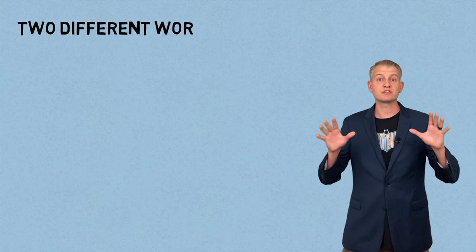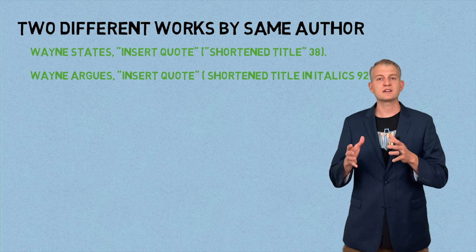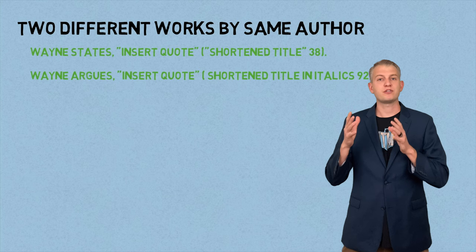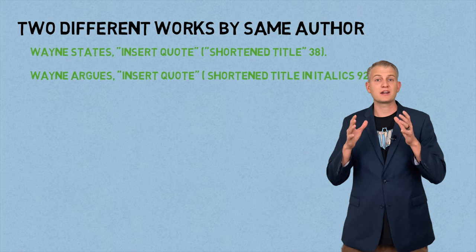If you're citing two different sources by the same author, make sure somewhere in the sentence you have the author's name. Next, if it's a short work like an article, in the parentheses include the shortened title in quotes followed by the page number. If it's a longer work like a book, website, TV show, or play, have the shortened title in italics followed by the page number in the parentheses.